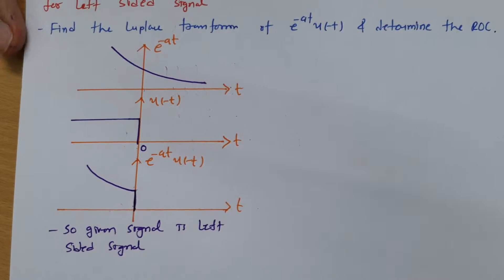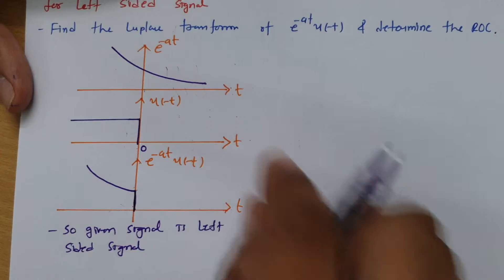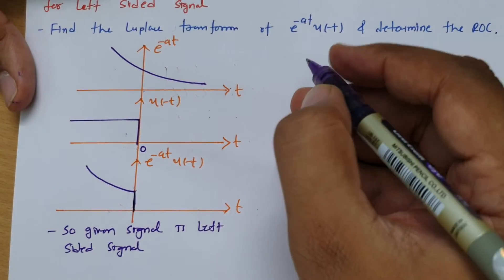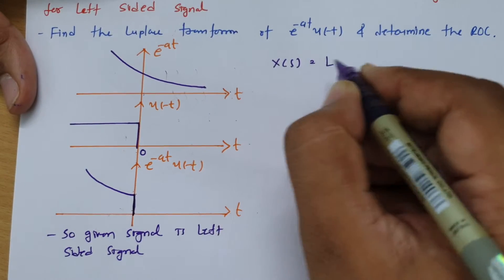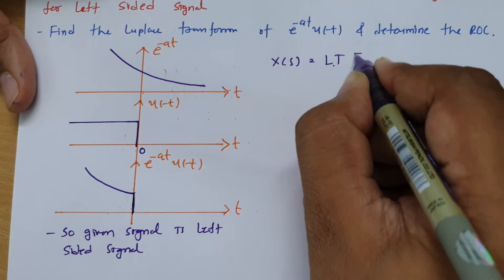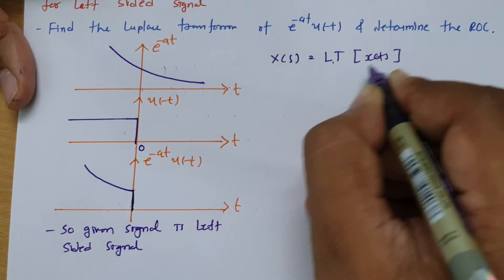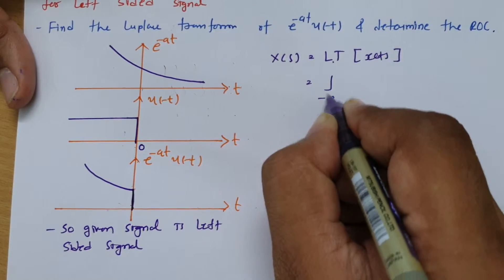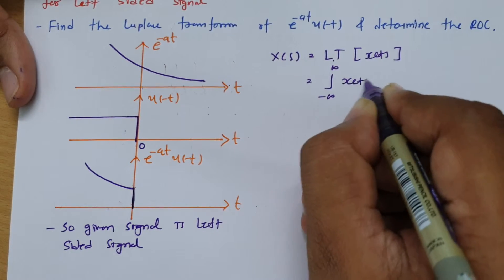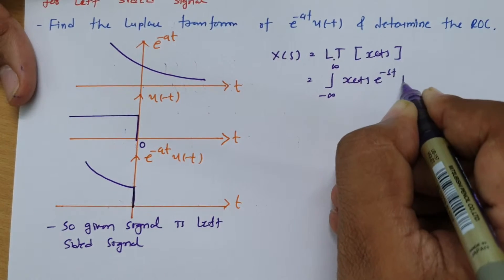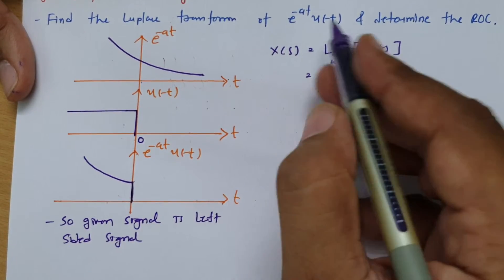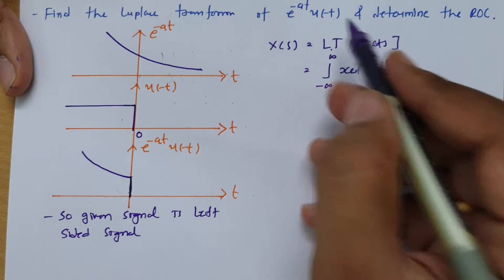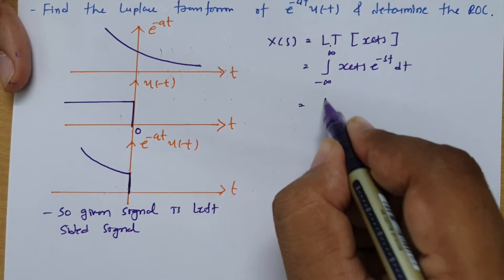Now let us calculate Laplace transform of this given signal. Laplace transform is represented by x of s and the basic formula is minus infinite to infinite x of t e to the power minus st dt. Now x of t is e to the power minus at u of minus t, so let us place it.